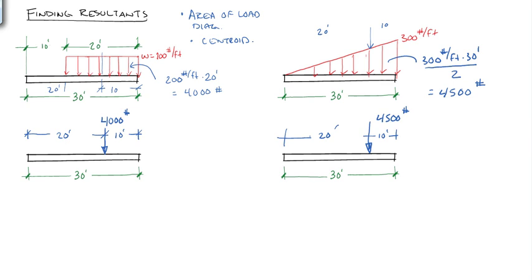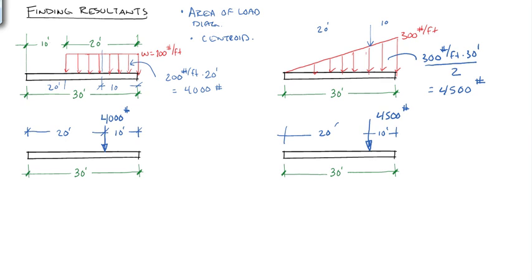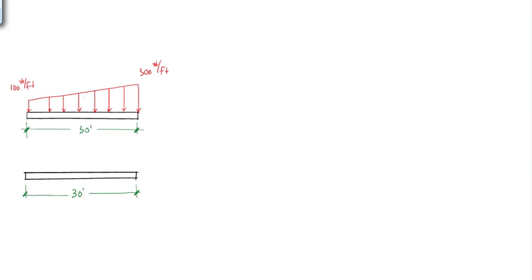And we can do this for multiple loads on the same beam. Let's go down and look at a little bit more complicated one. This is a trapezoidal load. And it's easy to find the area of a trapezoid. The area of a trapezoid is the average of the two heights times the base. So in this case, it would be 30 feet times 100 pounds per foot plus 300 pounds per foot divided by 2, or 6,000 pounds.